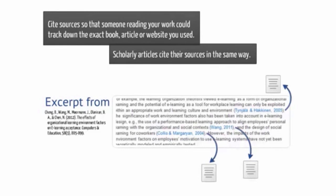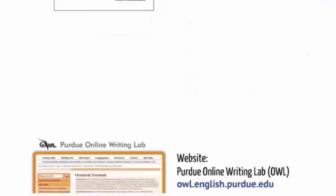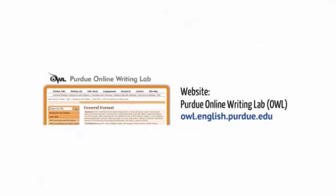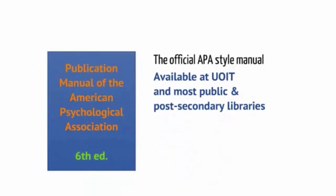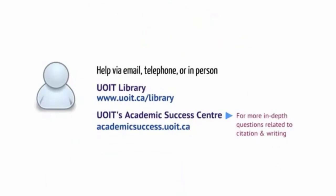Scholarly articles cite their sources in the same way. The library has created citation help guides for APA, MLA, and legal citation styles, available on our website. The Purdue Online Writing Lab, or OWL, website is also a great resource with a section on APA style and lots of examples. You can consult the official style manuals such as the style manual of the APA, available in the library as well as in most public and post-secondary libraries. Finally, you can get help from a librarian in person, over the phone, or by email. You can also get help particularly with writing from UOIT's Academic Success Center.